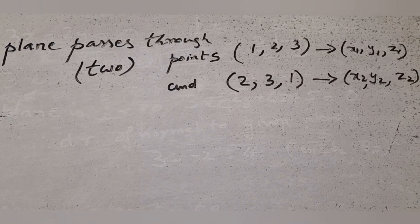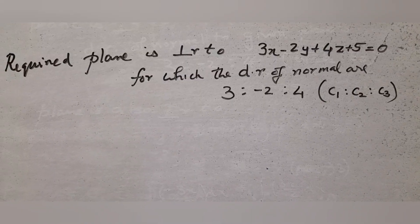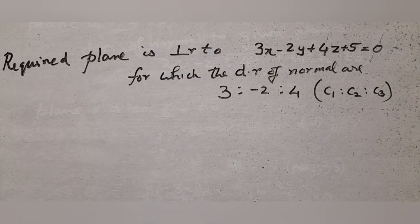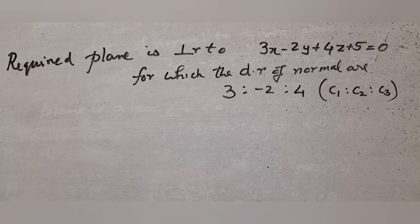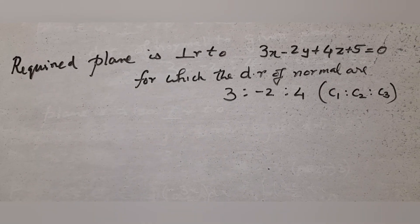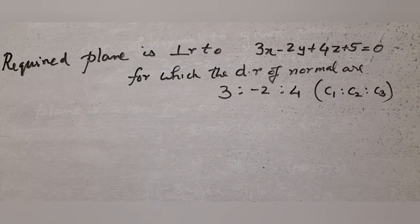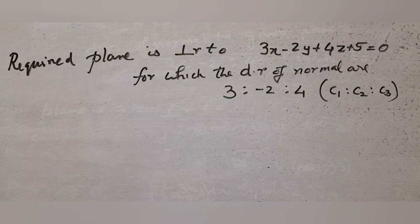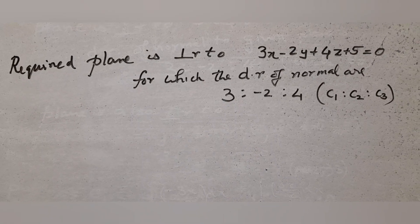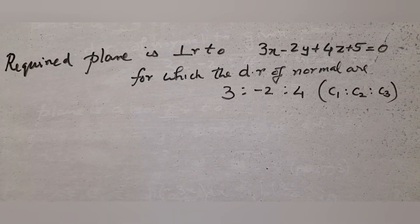The required plane is also perpendicular to 3x minus 2y plus 4z plus 5 equal to 0. The normal direction ratios of the given plane are 3 : -2 : 4. Take that as c1 : c2 : c3.